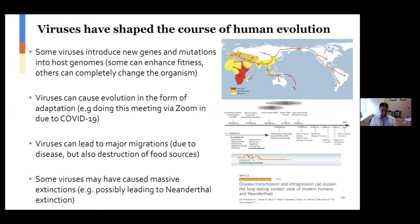Viruses have also shaped the course of human evolution. For example, some viruses can introduce their genes and mutations into the host genomes and then become integrated, as what happened in the course of evolution of humans and perhaps every other organism. Viruses can cause evolution in the form of adaptation — like, for example, we're doing this meeting via Zoom due to COVID-19. But thousands of years ago, major virus infections often led to major migrations, sometimes due to the disease that humans experienced, but sometimes also due to the destruction of food sources. Viruses don't just infect humans — they can infect the animals and even plants that humans consume. So destruction of these food sources could occasionally lead to major human migrations.